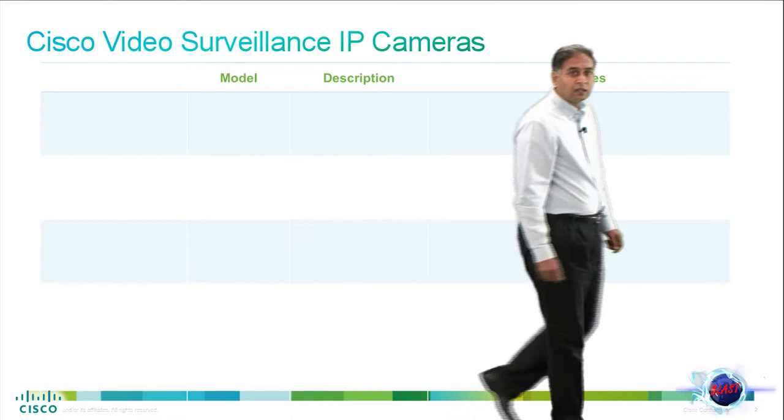Cisco has a portfolio of video surveillance IP cameras, encoders and edge video analytics. This portfolio spans all the way from encoders for analog camera integration to sophisticated high definition 1080p cameras. All the products support H.264 encoding which provides the best bandwidth and storage optimization of all the video compression schemes.